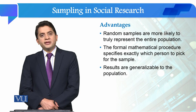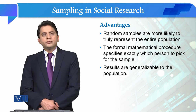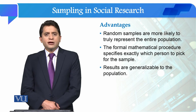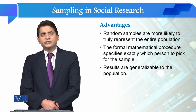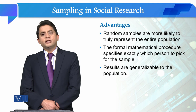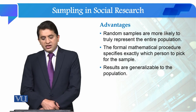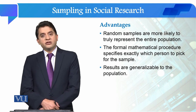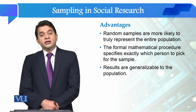The formal mathematical procedure specifies exactly which person to pick for the sample. In random sampling, when you follow a formal mathematical procedure, you know exactly which respondent or population element you need to include in your sample.